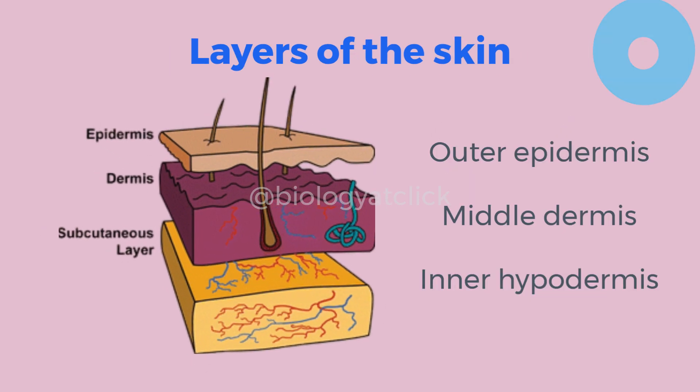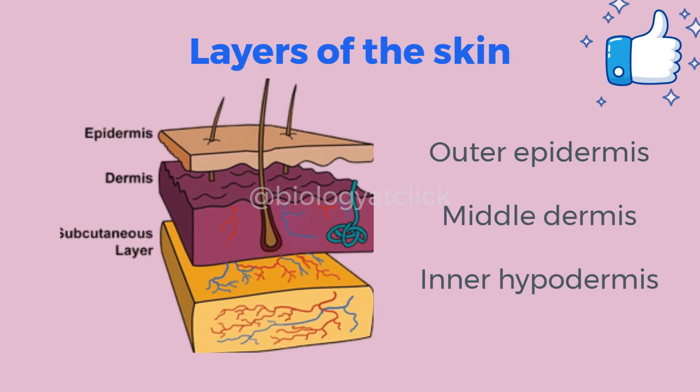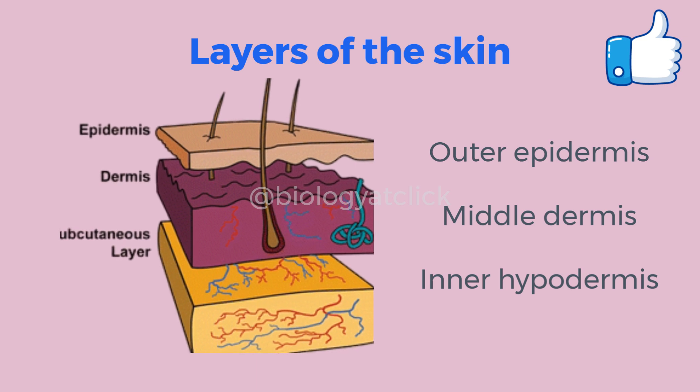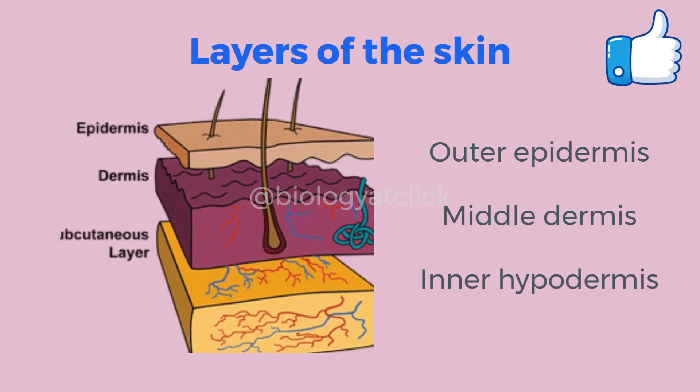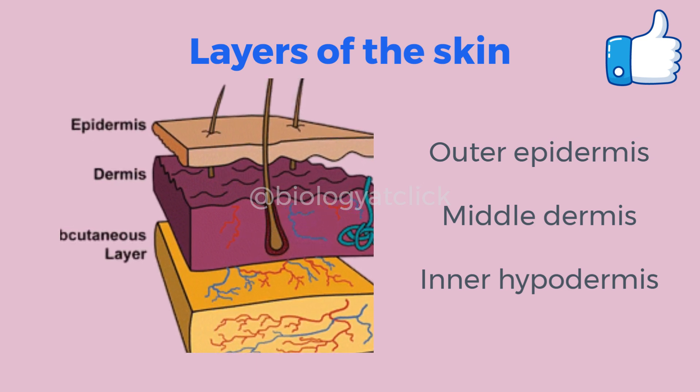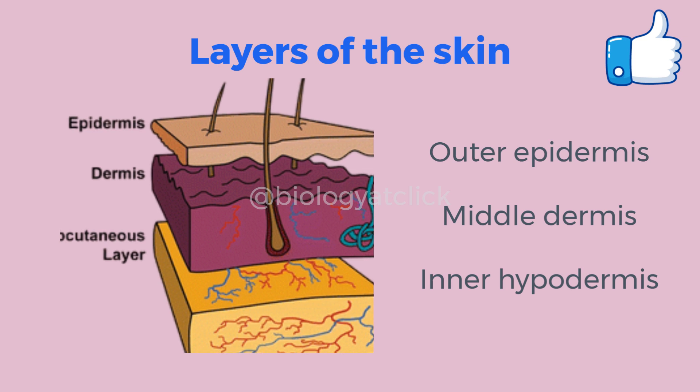Let's talk about skin anatomy. Skin consists of three layers: 1. Epidermis, 2. Dermis, and 3. Hypodermis, also known as the subcutaneous layer.